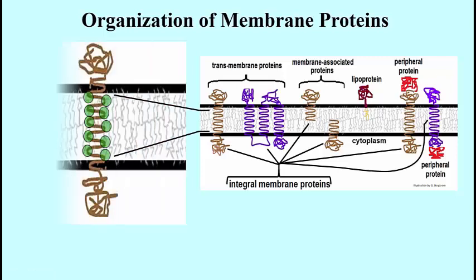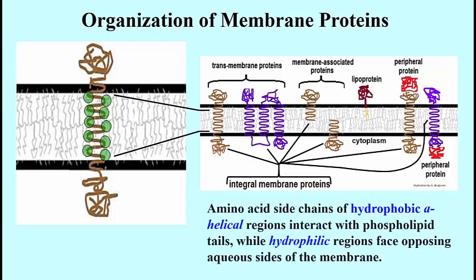If you look at the integral transmembrane protein on the far left, you can see that the portion that is in the membrane is alpha-helical. As it passes through the phospholipid bilayer, the helix is associated with the phospholipid tails. The green balls on this helix are the side chains of the amino acids, and they must all be hydrophobic in order to interact with the hydrophobic fatty acid tails of the phospholipids. And that's true of all the cartoon proteins shown in the picture above.